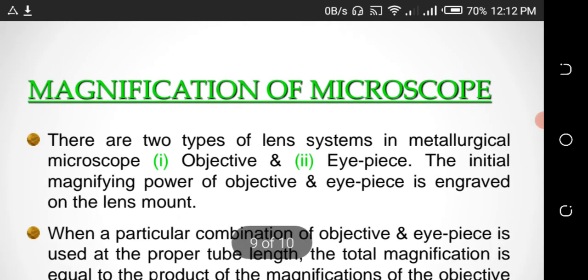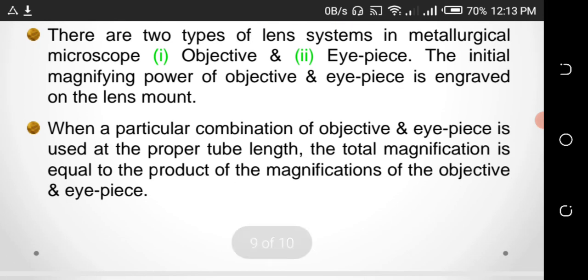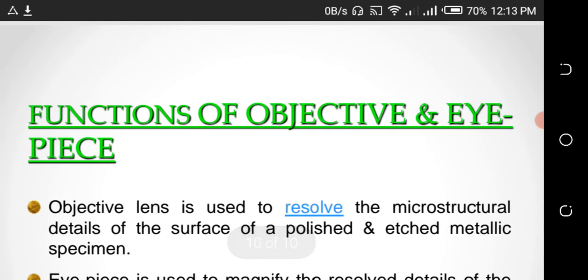Magnifications of microscope. There are two types of lens systems in metallurgical microscope: number one, objective, and number two, eyepiece. The initial magnifying powers of objective and eyepiece is engraved on the lens mount. When a particular combination of objectives and eyepiece is used at the proper tube length, the total magnification is equal to the product of magnification of the objective and eyepiece.